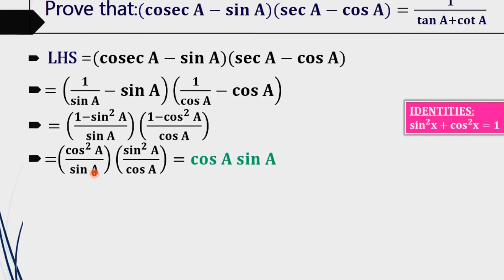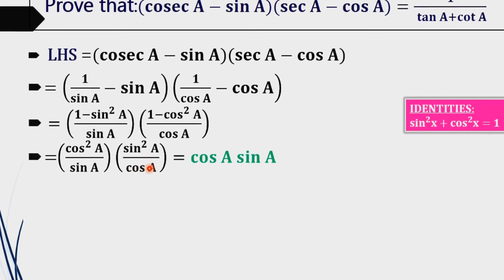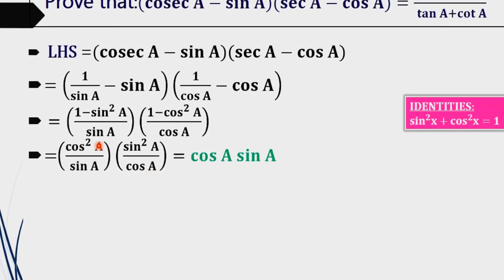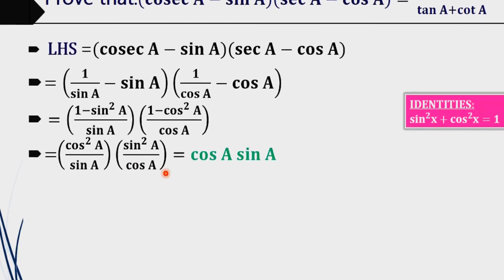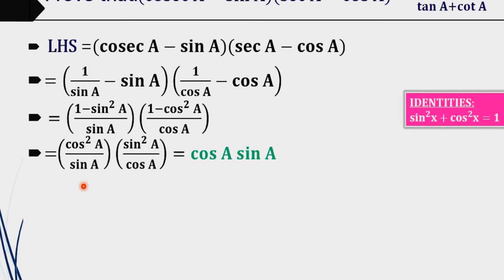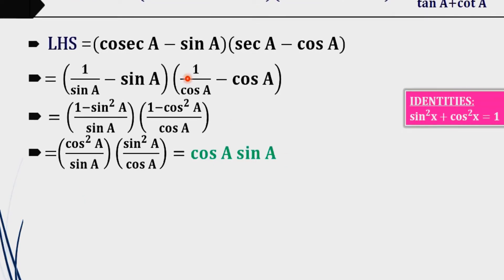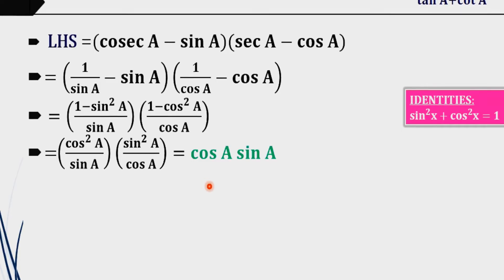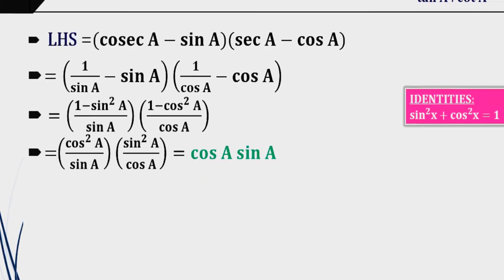Then we get cos²(a)/sin(a) × sin²(a)/cos(a). By cancelling cos²(a) and sin²(a), we will get sin(a)·cos(a). So our LHS is equal to sin(a)·cos(a), which is the simplified form.